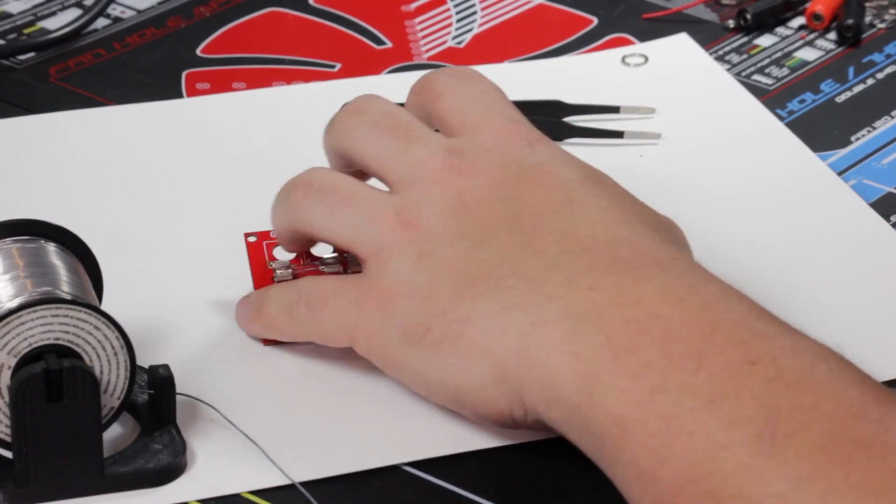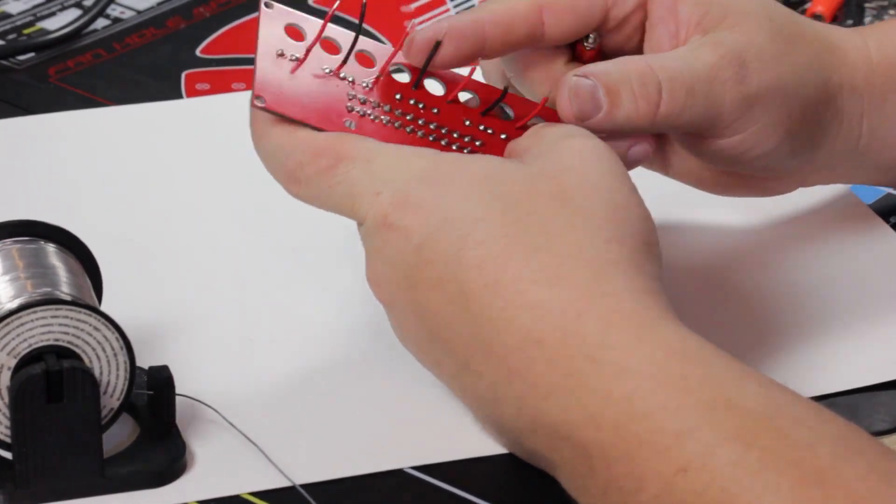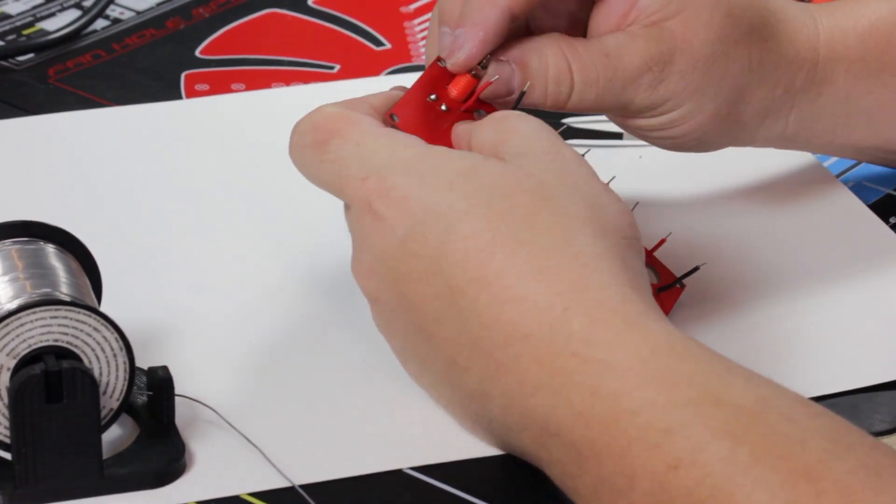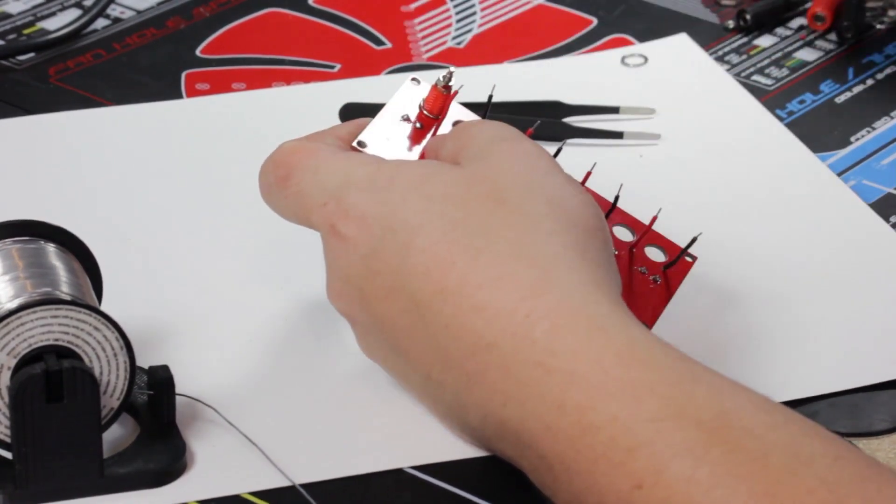With all of the wires soldered in, it's time to attach the binding posts. Place the posts in their corresponding holes and secure them to the circuit board using a lock washer followed by a nut.